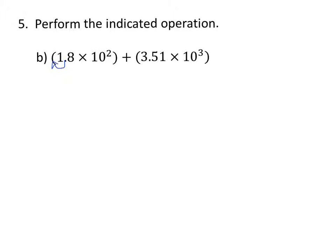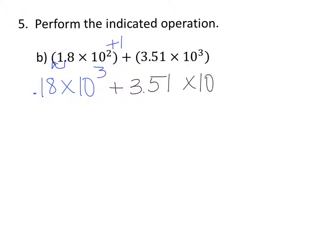So since we need to increase this by 1, we're going to move the decimal 1 to the left. That's going to give us 0.18 times 10 to the 3rd now. And then we still have the second one that's the same, plus 3.51 times 10 to the 3rd.